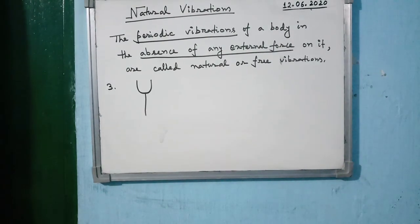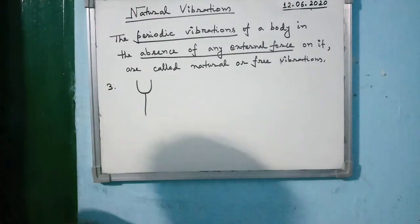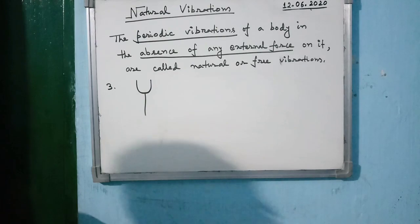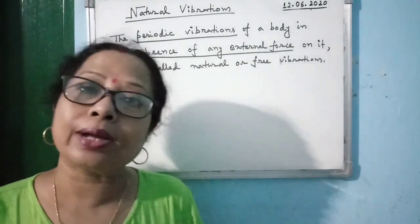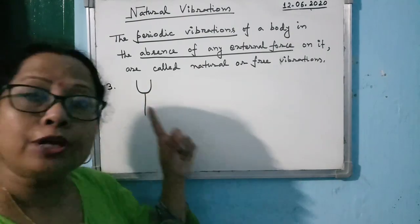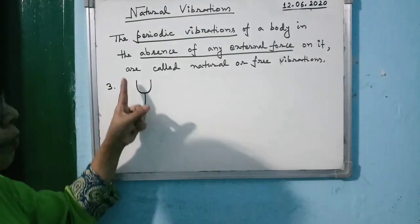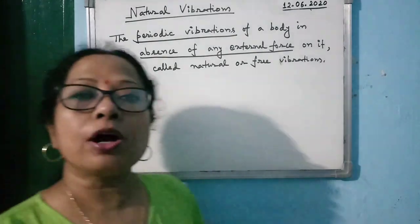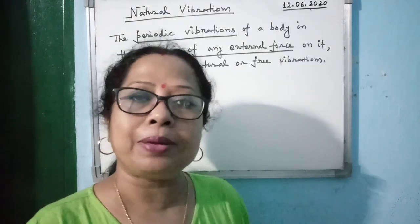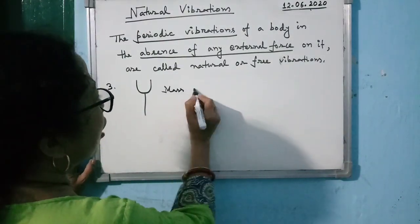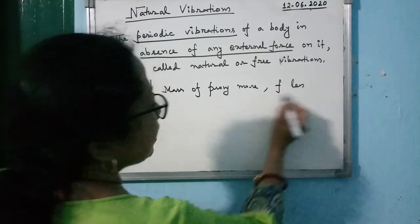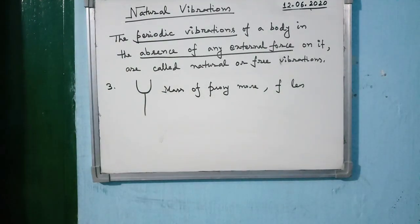The third example of natural vibration is the vibration of a tuning fork. A tuning fork has one handle and two prongs. If you strike the prong on a rubber pad and hold it near your ear, you can hear sound. The frequency of sound produced by a tuning fork depends on the length and mass of the prong. If the prong is heavier, the frequency is less, and vice versa.